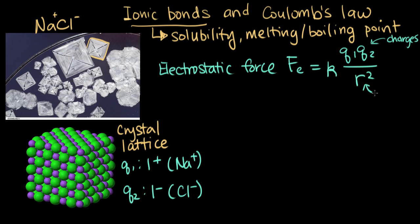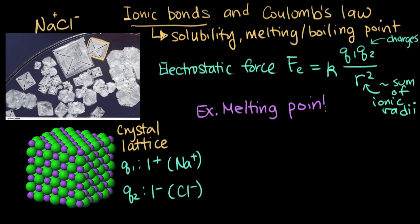And then R squared here is the distance between the ions. And we usually approximate it as saying it's a sum of the ionic radii for the two ions we're looking at. So we can use Coulomb's law here to explain some properties that are related to the strengths of ionic bonds. And so the example we're going to go through today is going to be that of melting point.